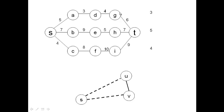On the path S, A, D, G, T, the bottleneck bandwidth is the bandwidth of the link with the minimum bandwidth. The bandwidths are 5, 3, 4, and 6 megabits per second, so the minimum — the bottleneck bandwidth — is 3. On the path S, B, E, H, T, the minimum bandwidth is 5, so the bottleneck bandwidth is 5, meaning you cannot send more than 5 megabits per second on that path. Similarly, on the path S, C, F, I, T, the bottleneck bandwidth is 4.